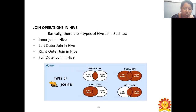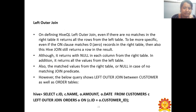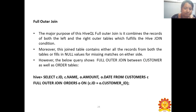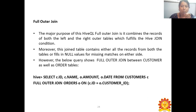The Full Outer Join retrieves data from both the left and right tables. The major purpose of HiveQL Full Outer Join is to combine records from both the left and the right tables, fulfilling all Hive join conditions.